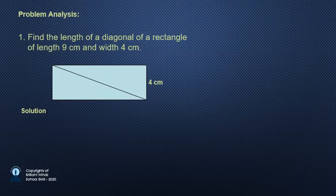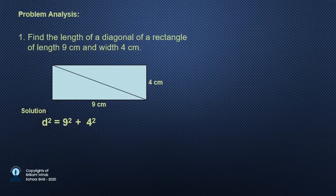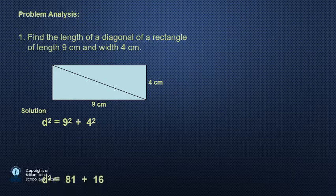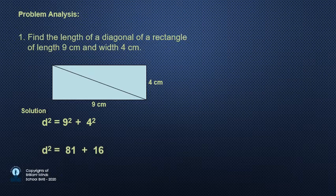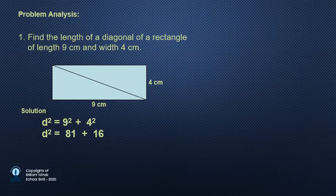Then if we want to find the length of hypotenuse or the diagonal, we will do what? 9 power 2 plus 4 power 2, because they are the legs of the right angled triangle. Then d power 2 equals 9 power 2 plus 4 power 2, which equals 81 plus 16.